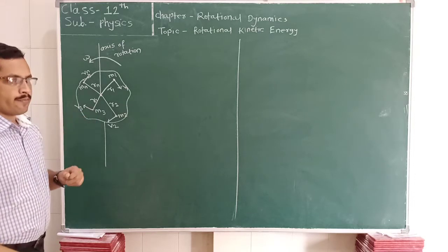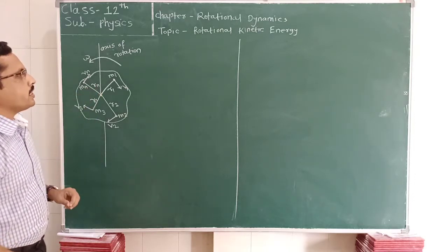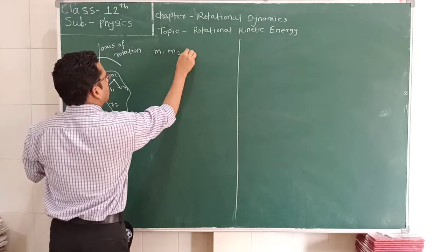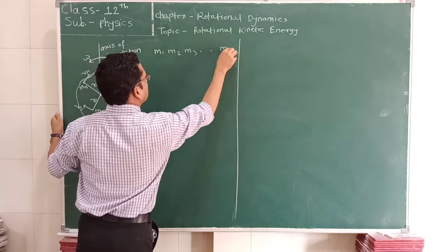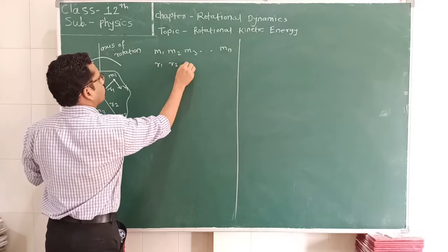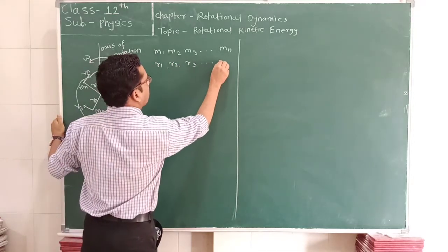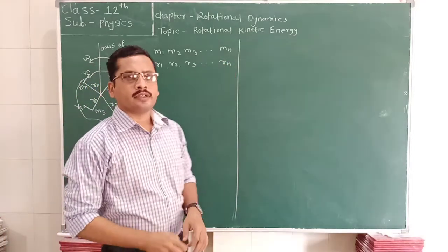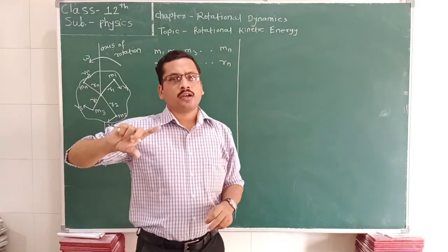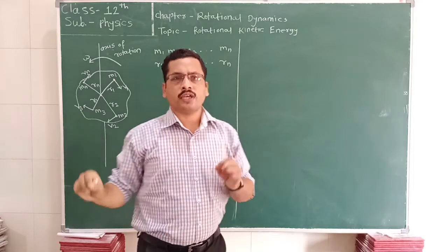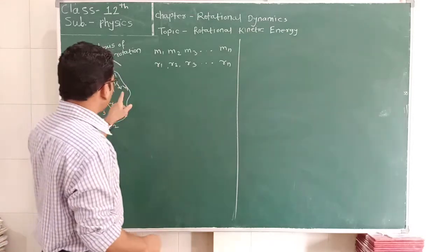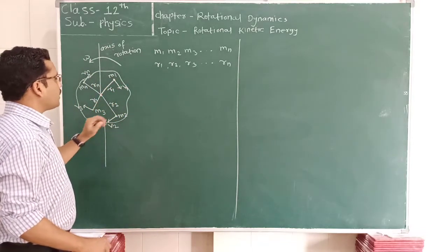Consider a rigid body of any shape. We know that this rigid body is made up of a large number of particles having masses M1, M2, M3 up to Mn, which are situated at distances R1, R2, R3 from the axis of rotation. Consider the whole body is rotated with angular velocity omega. The angular velocity of the whole body is constant, but the linear velocity of each particle will be different because the distances of the particles from the axis of rotation are different.